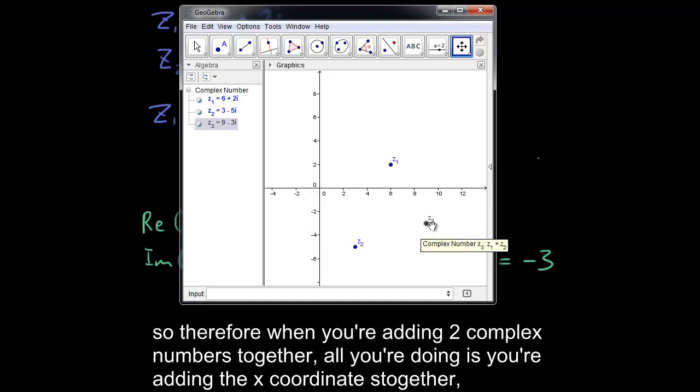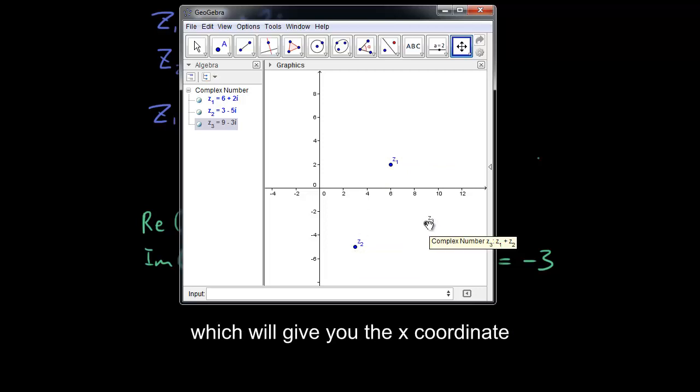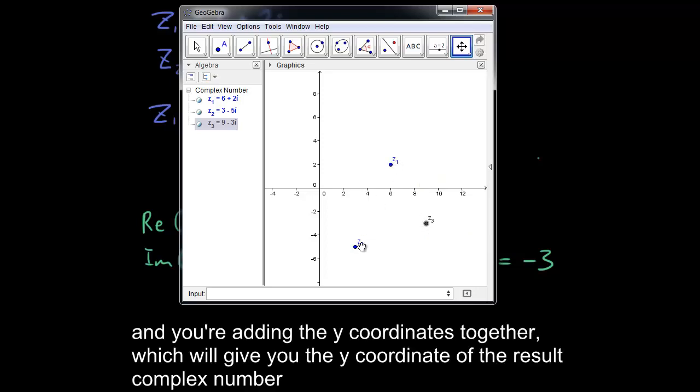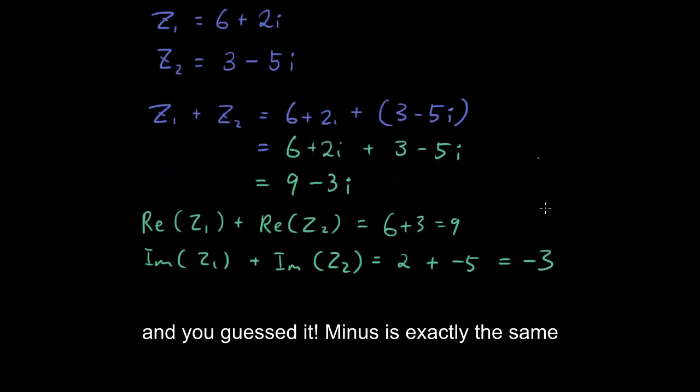Now have a look at where our z3 dot is situated, negative 3 for y-axis. So therefore when you're adding 2 complex numbers together, all you're doing is you're adding the x-coordinates together, which will give you the x-coordinates for the result.